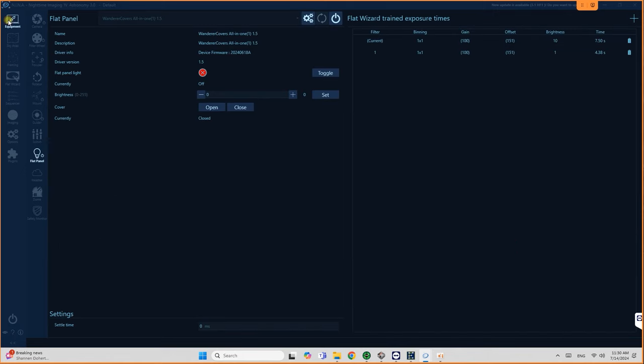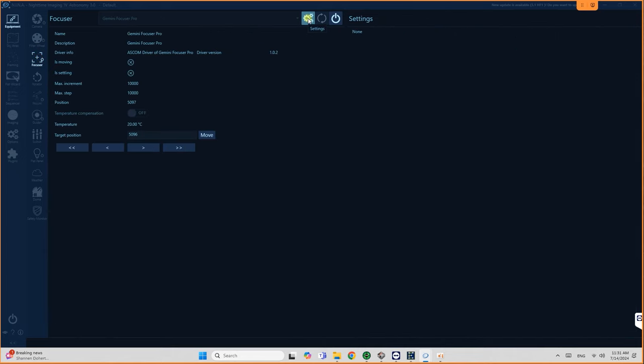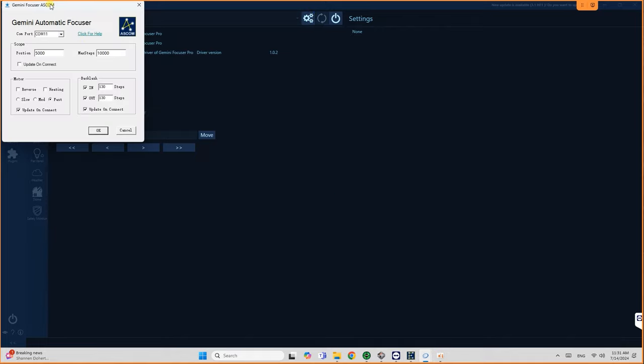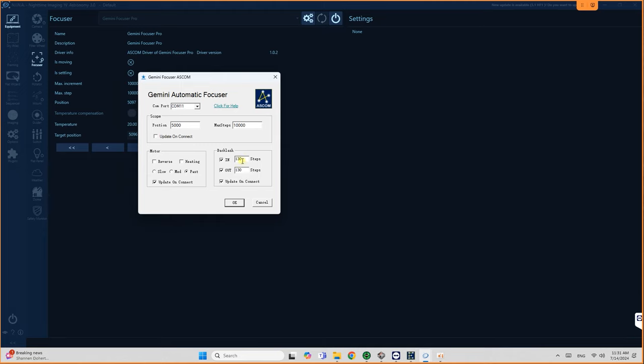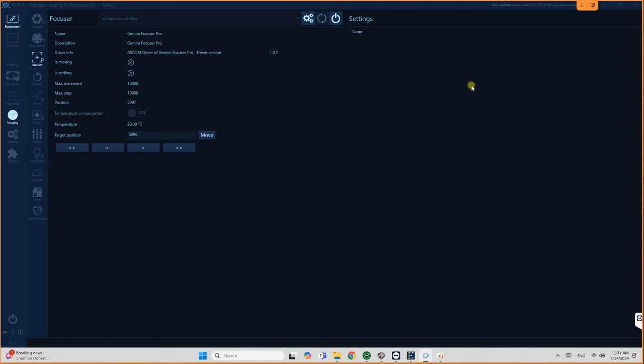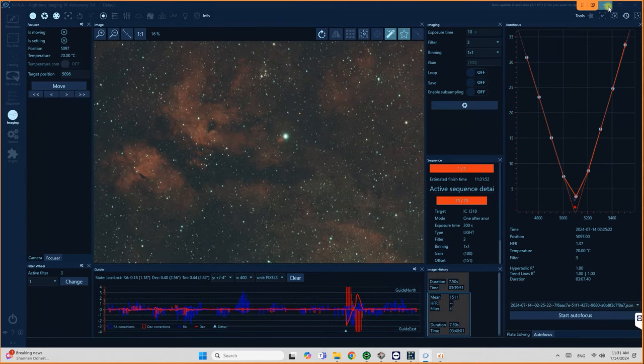But what I did is I went to equipment section, then I went to focuser. And I did my backlash compensation settings in actual settings of the focuser. And I set it in the ASCOM driver settings here. So in my case, the backlash is 130. And I, to be honest, have no idea if it's a lot or if not, but it's manageable. And as you can see, I was able to get a nice curve that looks pretty good.